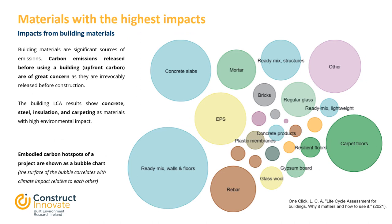Building material is a significant source of emissions. Carbon emissions released as upfront embodied carbon are of great concern as they are irrevocably released before construction. The building life cycle assessment results show concrete, steel, insulation and carpeting as materials with high environmental impact. The figure shows the embodied carbon hotspots of a project as a bubble chart, where the size of the bubble correlates with the climate impact. Cement and ready-mixed concrete for structural elements like slabs and walls are responsible for the most significant contribution in carbon emissions.